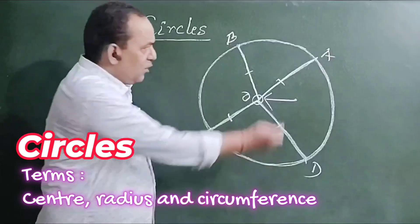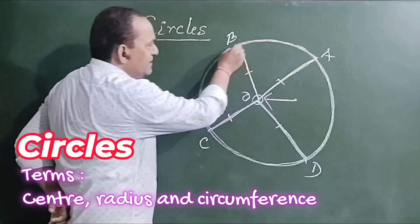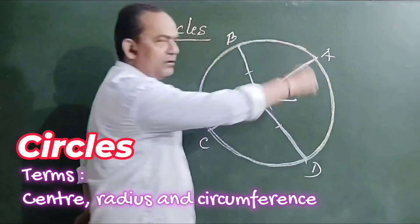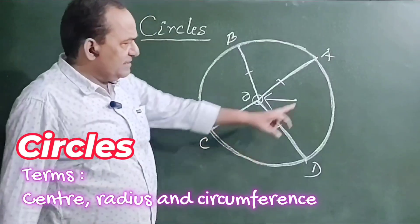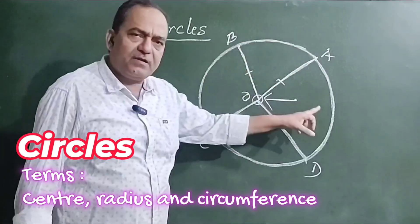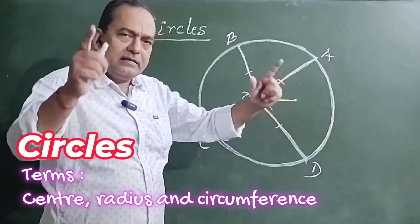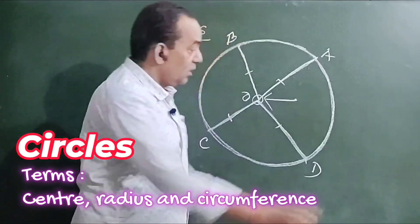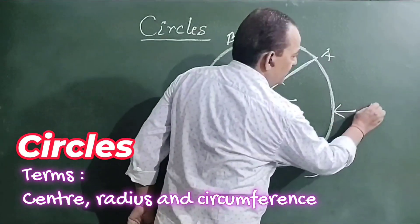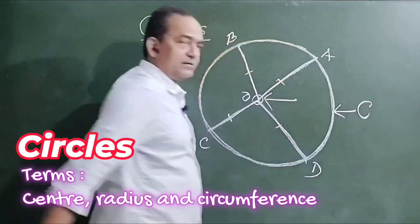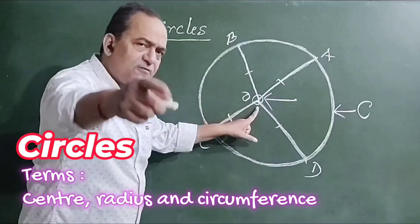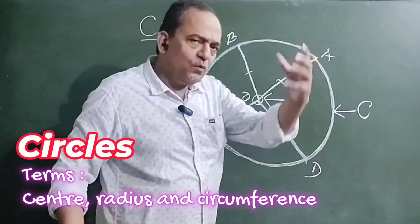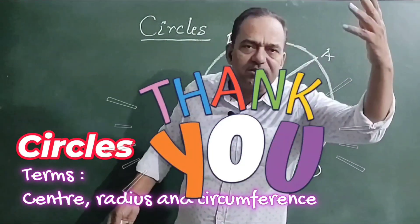And what is this curved line called? The name of the curved line is the circumference of the circle. So this is the circumference of the circle, this is the center of the circle, and OB and OC are the radii of the circle.